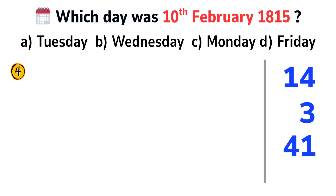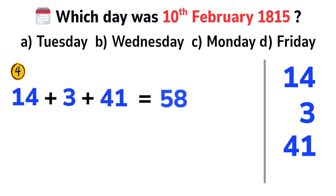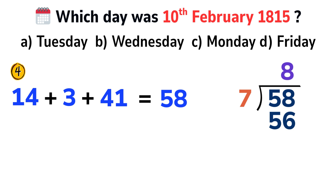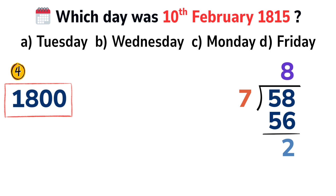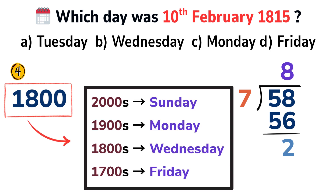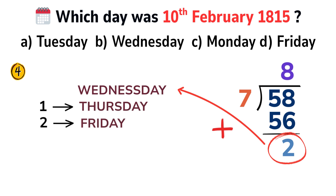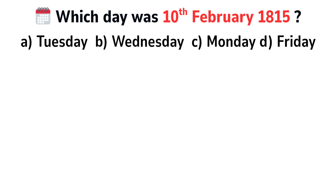Add all values: 14 plus 3 plus 41 equals 58. Divide by 7: 58 divided by 7 gives remainder 2 (since 7 times 8 equals 56). In our example, the century base is 1800, and from the chart the base day is Wednesday. Count 2 days forward from Wednesday: Thursday, then Friday. The correct answer is option D, Friday.